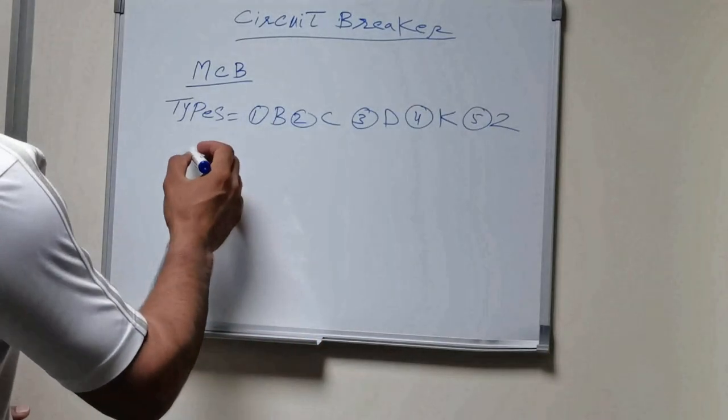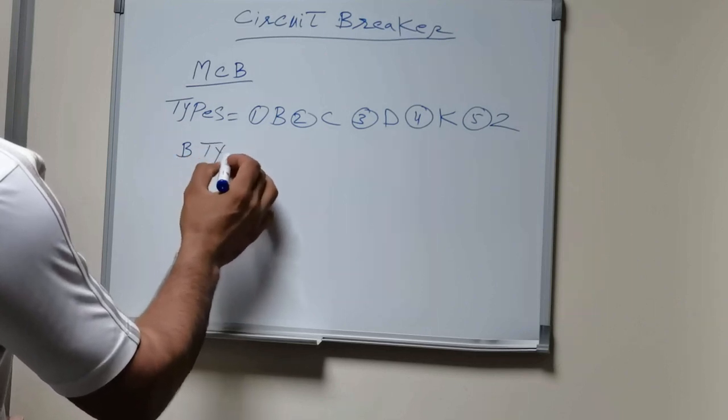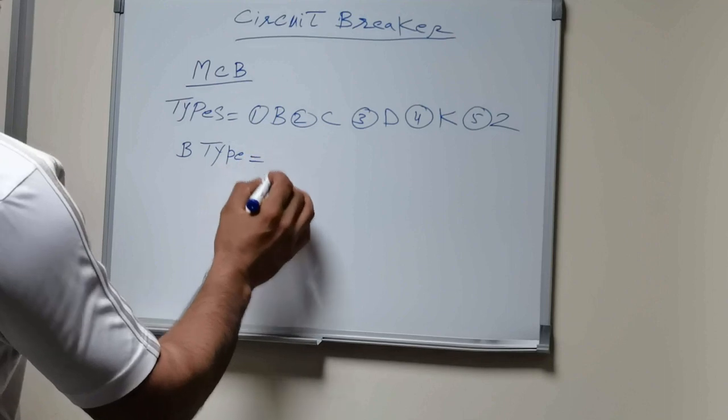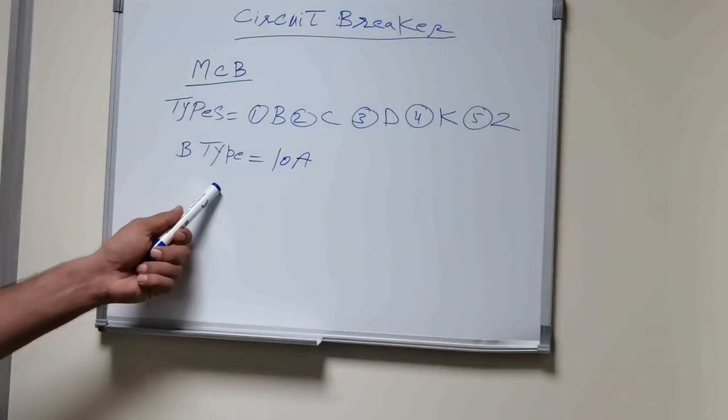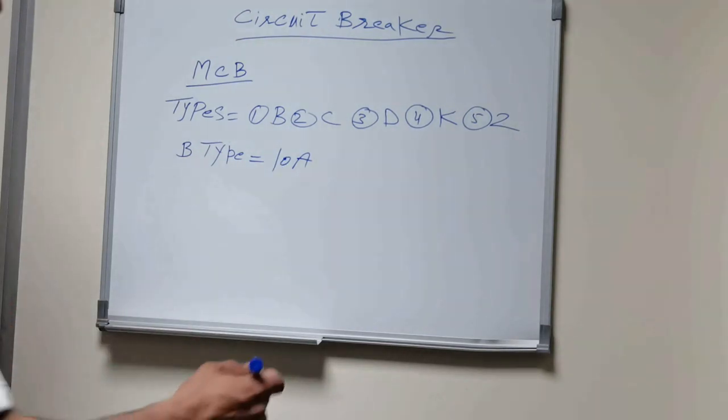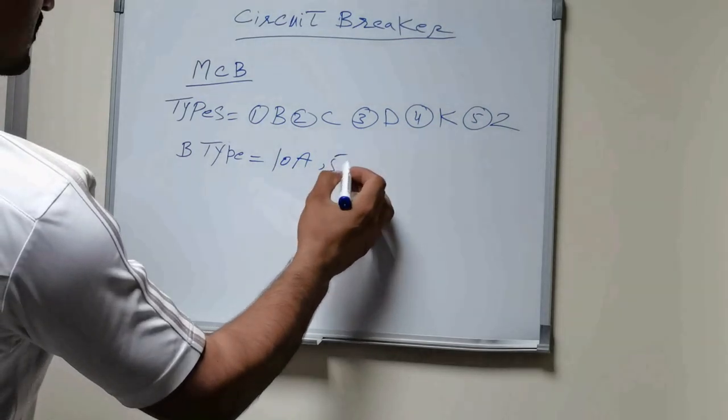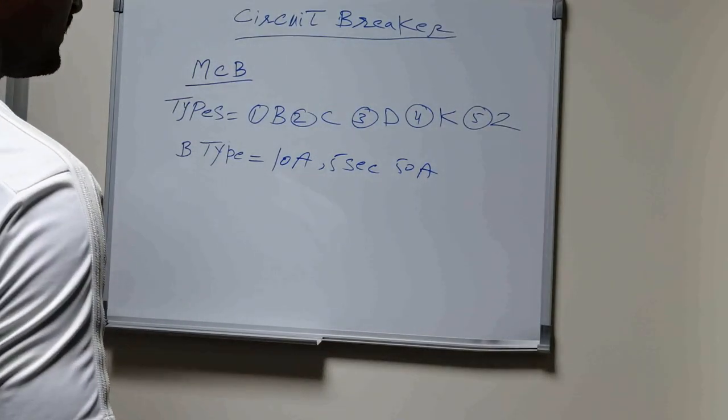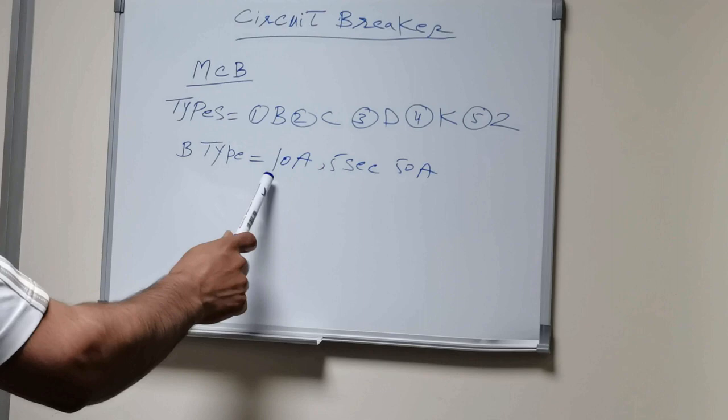For example, if we use MCB Type B, it means this breaker can stand up to 5 times of its current rating for 5 seconds. So it can stand up to 5 seconds for 15 amps. Within the 5 seconds, this breaker will trip if the load exceeds from 10 amps.